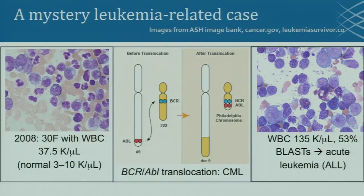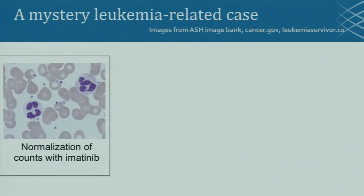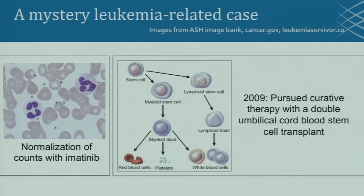Unfortunately, shortly after giving birth, the number of white blood cells tripled. She ended up with a white blood cell count of 135,000 per microliter — over 10 times the normal amount. At this point, she no longer had chronic leukemia but a much more aggressive acute leukemia. Her doctors decided to put her on Imatinib, and luckily she responded quite nicely. However, the drug hasn't been approved for keeping acute leukemia under wraps, and so given her young age and healthy baby, a plan was made to pursue bone marrow or stem cell transplant.